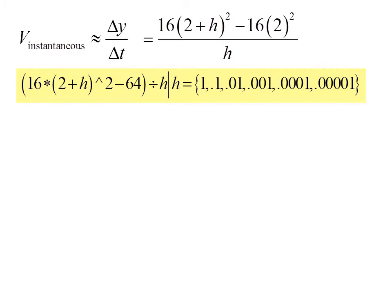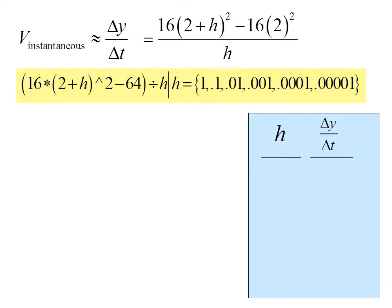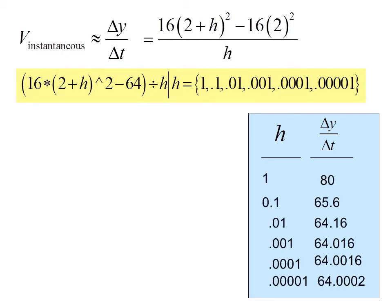We evaluate for h = 1, 0.1, 0.01, 0.001, and 0.0001. We use the vertical bar to mean 'such that.' Putting our answers in a table, we see that as h gets smaller and smaller, delta y over delta t seems to approach 64.